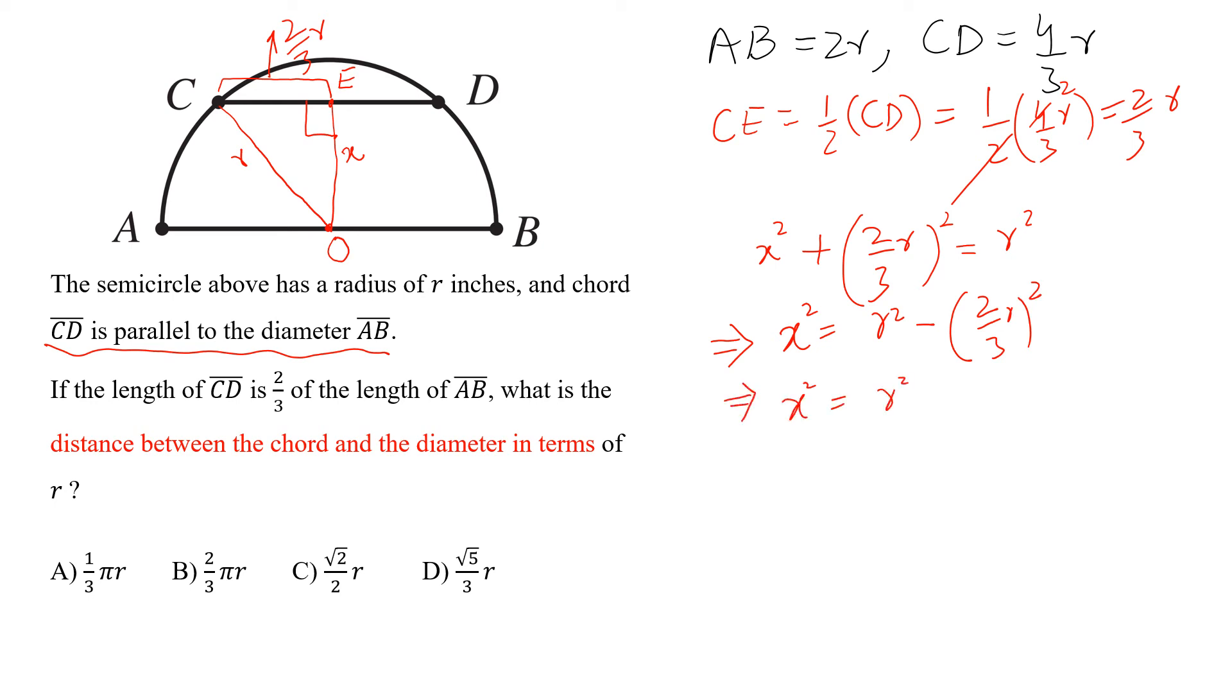We get x² = r² - 4/9r². By taking LCM, we get x² = 5r²/9.